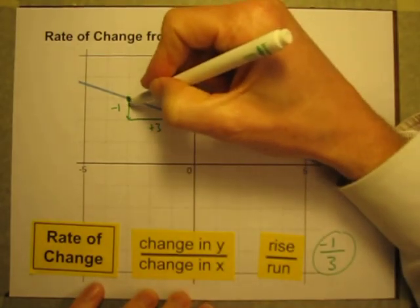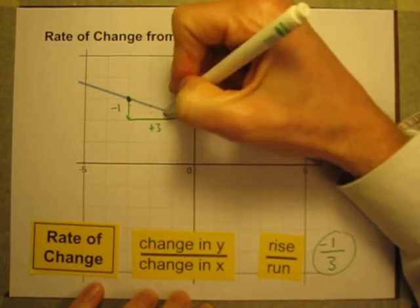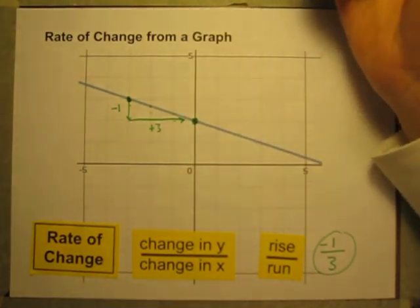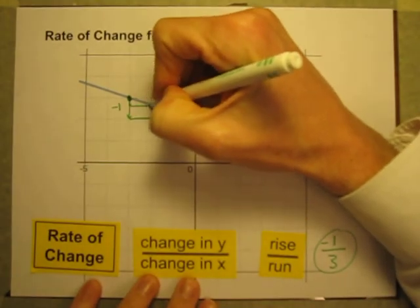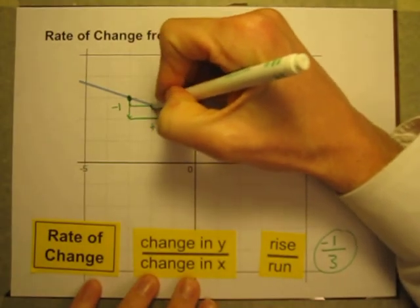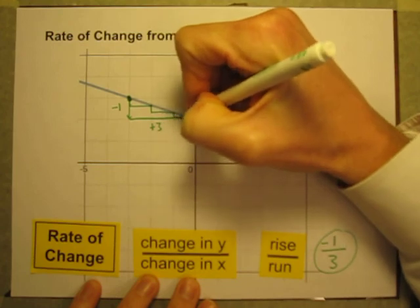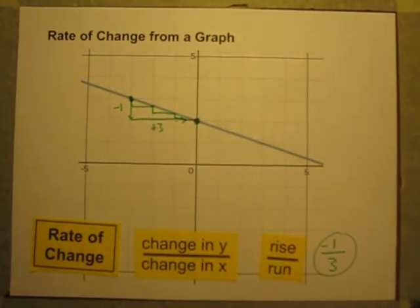You could also think of it as down one-third, right one — repeating down one-third, right one along the line. Either way, that is how you can calculate the rate of change when looking at a graph, whether it has units and a story or not.